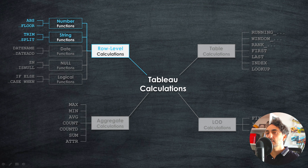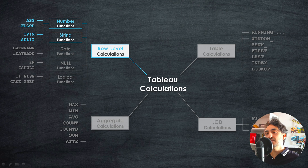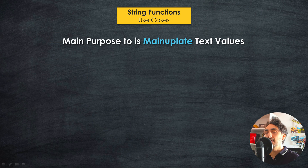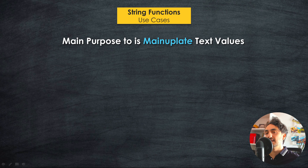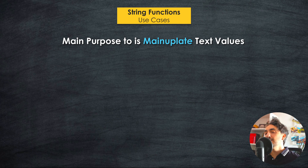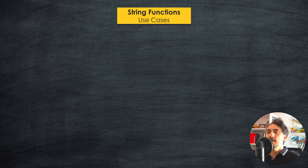Now we're going to focus on the second group of functions in Tableau under the category row level calculations. We have the string functions, and the main purpose of the string functions in Tableau is to manipulate and transform text values. So any field in our dataset with the data type string — there are many use cases and reasons to use string functions in Tableau.